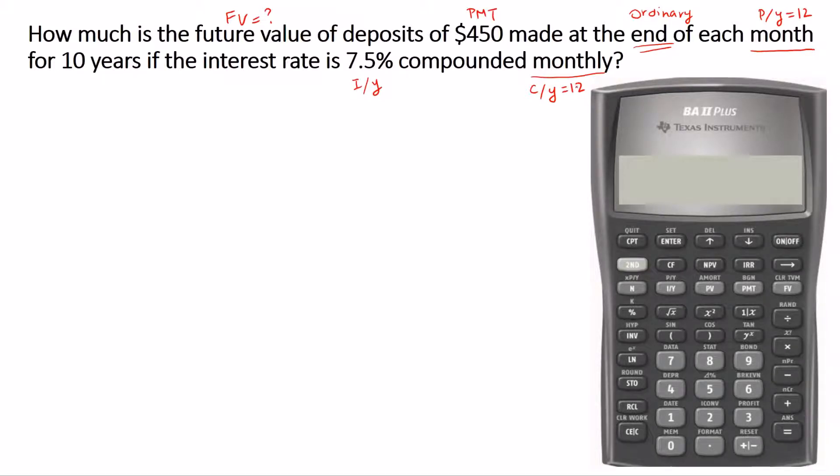The investment term is 10 years, so T is 10 years. We're going to be using this T to calculate the number of payments in the total term.